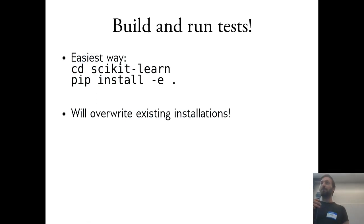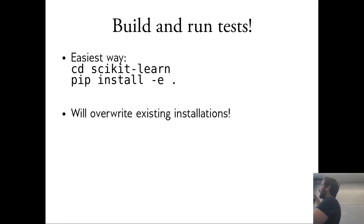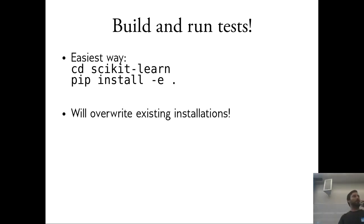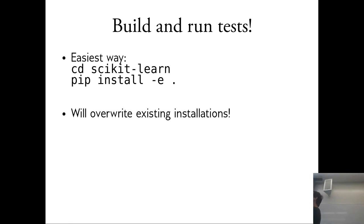So we now have our local copy and a fresh environment. We can install scikit-learn in this fresh environment. We cloned the repository, so we have a folder called scikit-learn. You can go into this folder and run 'pip install -e .' which will install the package from that folder. The '-e' stands for editable, which means you can make changes in this folder directly and they will be reflected in your installation — it basically just adds the current directory to your Python path.